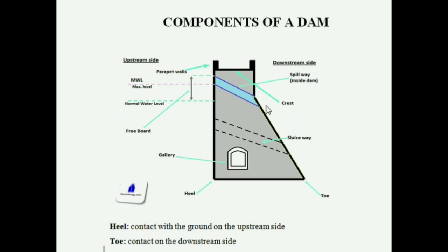This is called a spillway. A spillway is a passage for surplus water from the dam without making it overtop the dam. That means if the water level reaches the maximum water level, which is the maximum capacity of the dam, then the spillway gates are to be opened so that the excess water in the dam will be sent to the downstream side through these spillways.